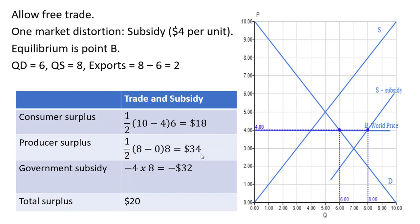In terms of the government subsidy, this subsidy program will cost the government $32. Eight units are being subsidized at $4 per unit. If we add up all three of these numbers, total surplus is $20, which is a little bit lower than before.